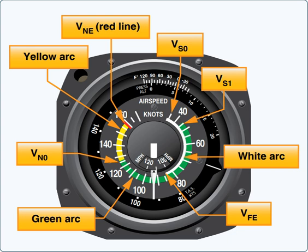The yellow arc cautions that flight should be conducted in this range only in smooth air, while the red line at the top of the yellow arc indicates damage or structural failure may result at higher speeds. The ASI in multi-engine aircraft includes two additional radial markings, one red and one blue, associated with potential engine failure.